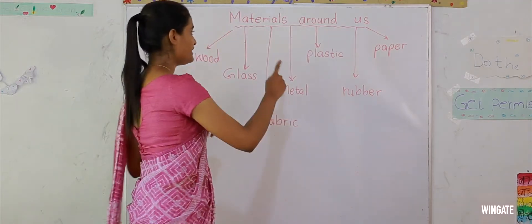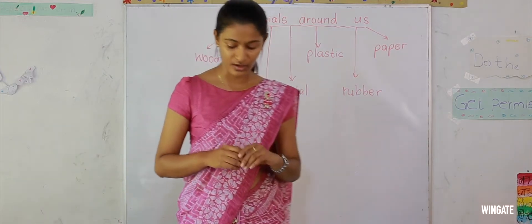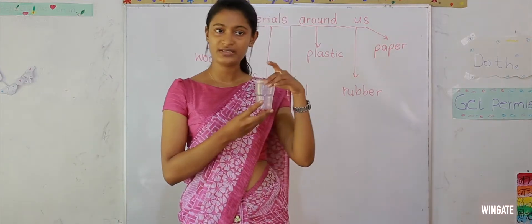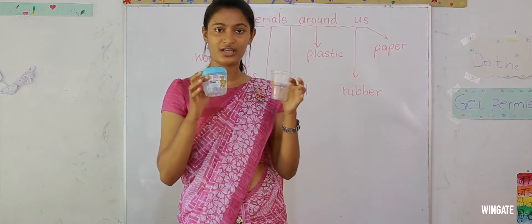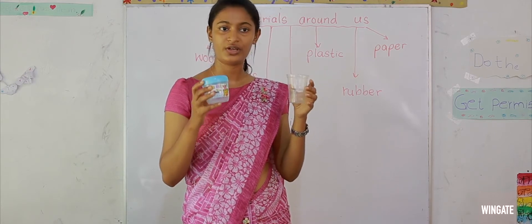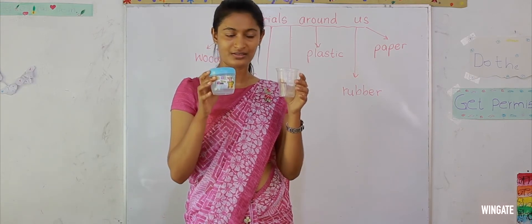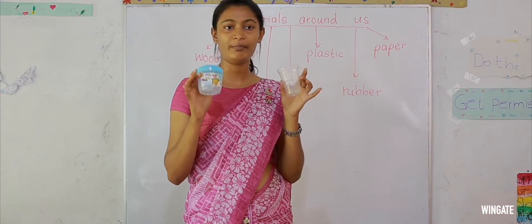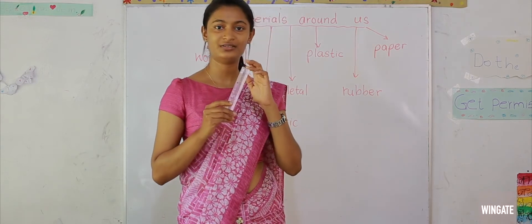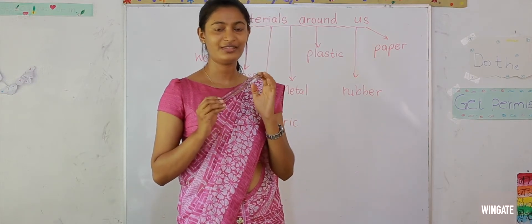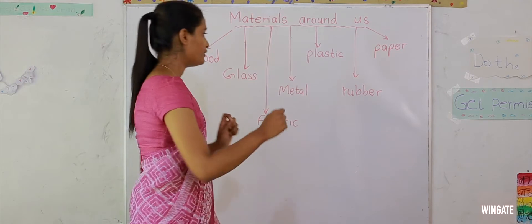We move on to the next material. It's plastic. There are different types of plastic around us. This is a plastic cup. This is also a plastic cup. Can you see? There is a difference between these two cups. We are going to learn that in the next section of this lesson. Now just look at this. Both of them are made of plastic. This is a ruler. You use this for your studies. This is made of plastic.